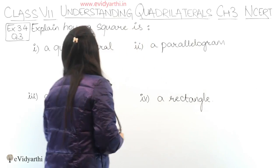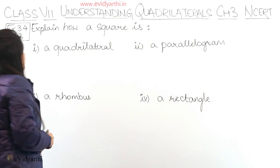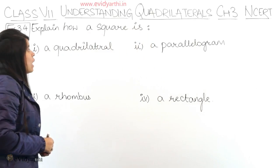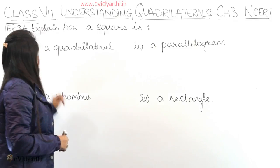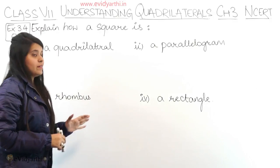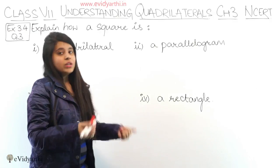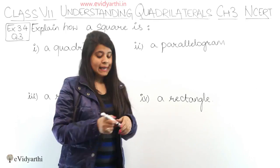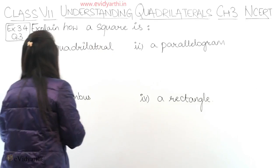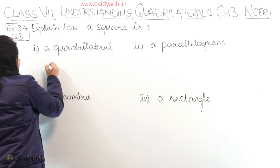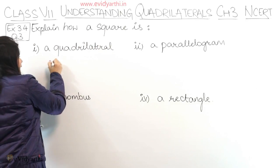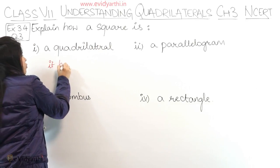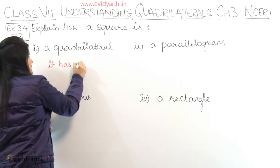In this question we have explained how a square is, first of all, a quadrilateral. We know that a square is a quadrilateral, but why? Simple reason: because it has 4 sides.